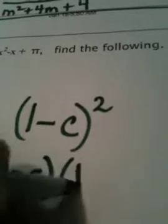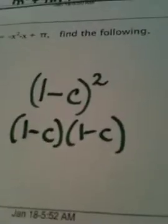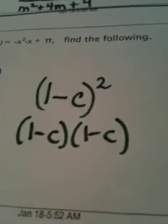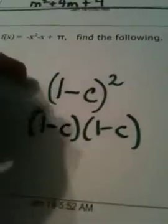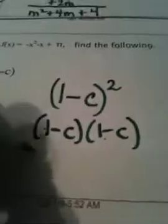1 minus c quantity squared is going to become a trinomial, just like in the last example. 1 minus c times 1 minus c is a FOIL method problem. But again, please remember, what we're really doing here is we're distributing. 1 times all of this and opposite of c times all of this. 1 times 1 is 1. 1 times the opposite of c is the opposite of c.